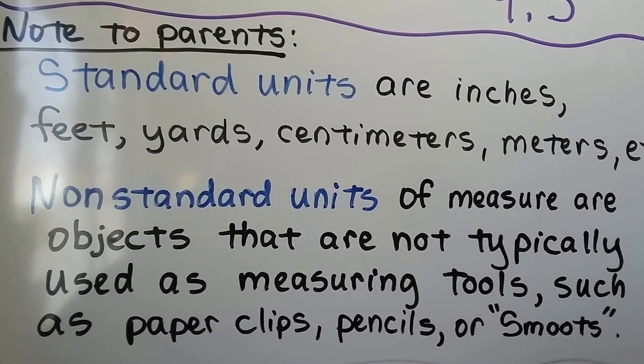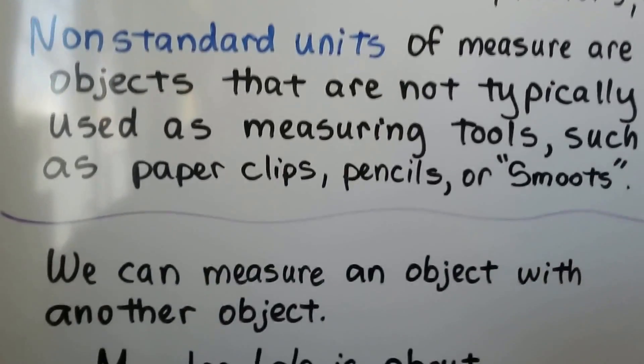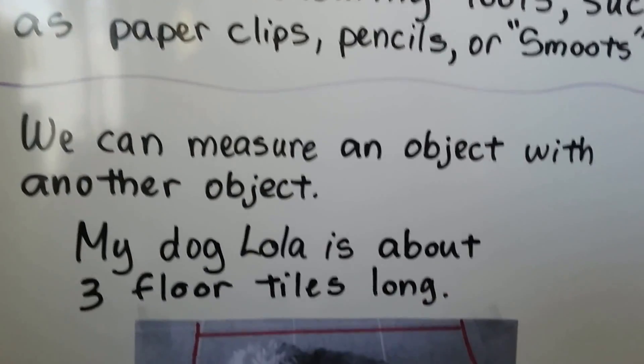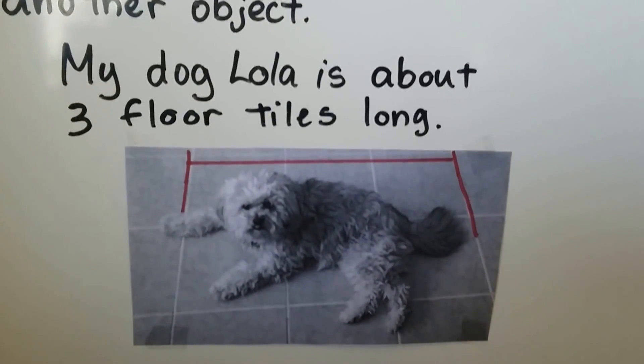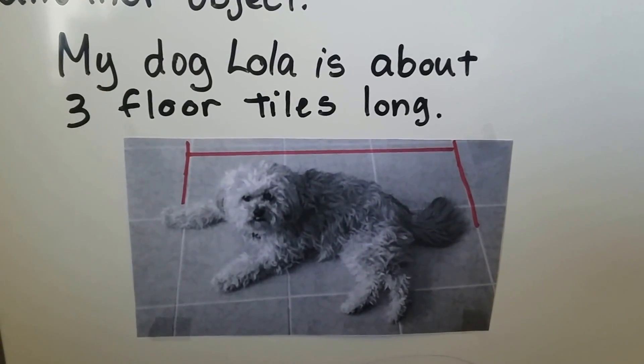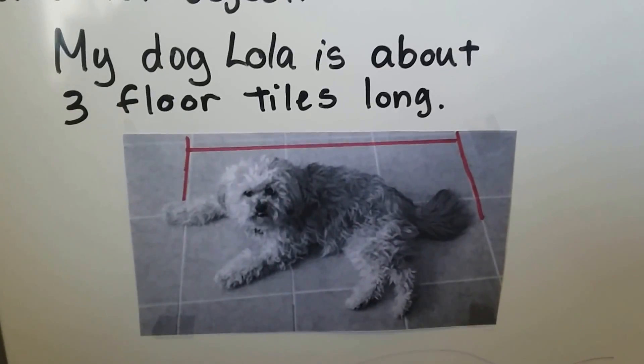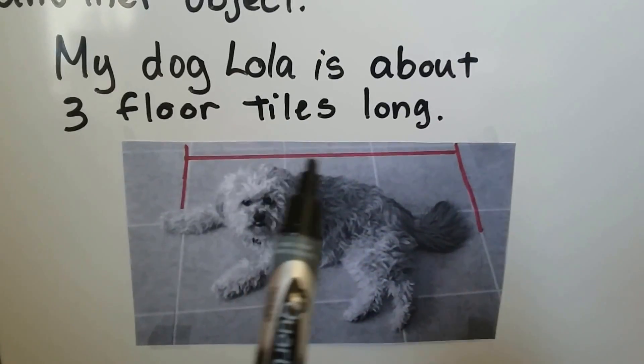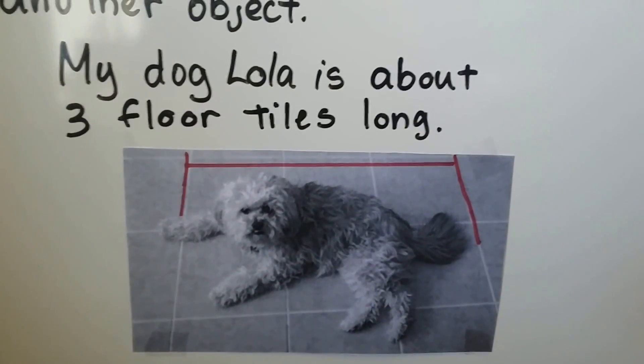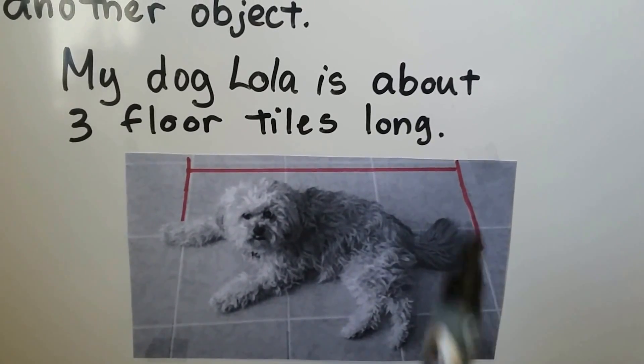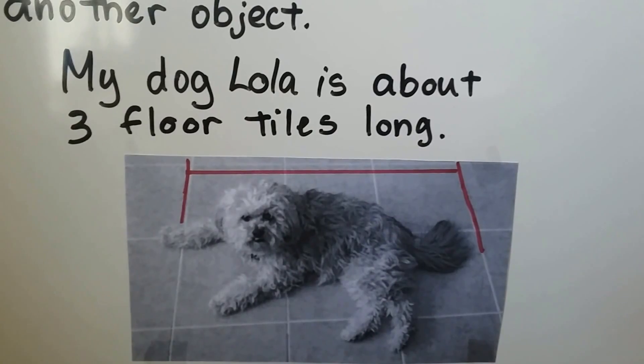We can measure an object with another object. My dog Lola is about three floor tiles long. You can see there's three tiles and she's laying on the floor. We have one, two, three, and it's not exact, so it's about three floor tiles long.